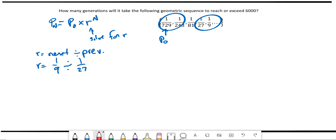And we know that when we divide by a fraction, it is the same as multiplying by the reciprocal. So we can say that r is 27/9, or that r is 3.